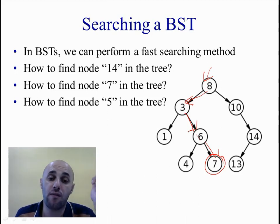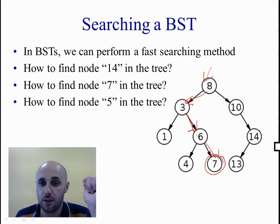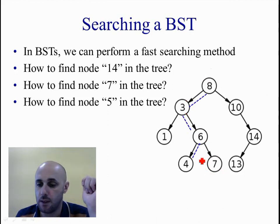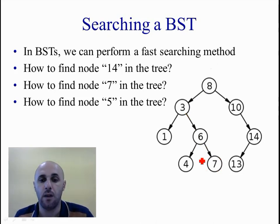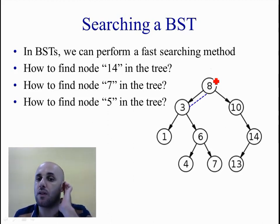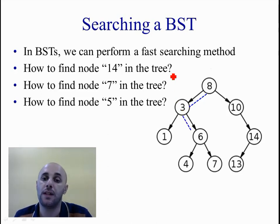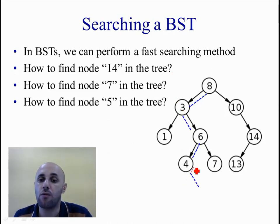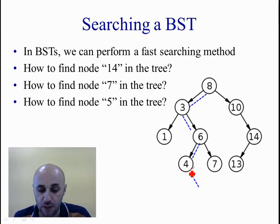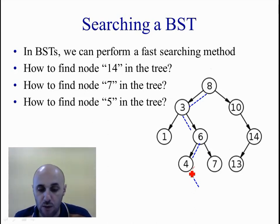Now how about finding node with value 5 in the tree? I start from the root. Is 8 equal to 5? No. I go left because 5 is less than 8. Is 3 equal to 5? No. I go right. Is 6 equal to 5? No. I would go left. Is 4 equal to 5? No. I have to go right, but there is no right subtree of 4. In this case, I have reached the bottom of the tree and couldn't find the value 5, so it is safe to assume that 5 does not exist in the tree at all.